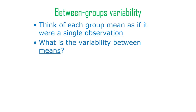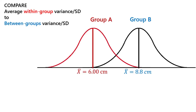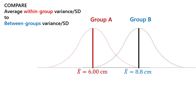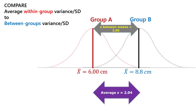Between-groups variability: we think of each group mean as if it was a single observation, then we look at the variance between the means. The standard deviation between these two means is 2, and the variance is 4.01. We just have two means: 6 and 8.8. The standard deviation between those two means is 2, while the average standard deviation within each group is 2.04. Those are extremely similar, so we're probably not going to say we think there's actually a difference between these groups in the population.